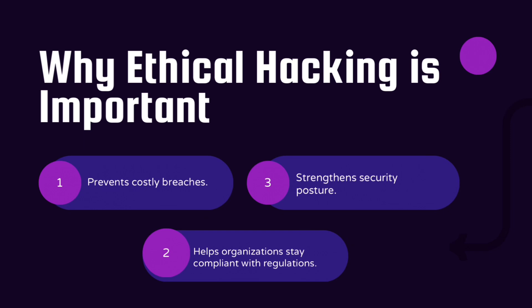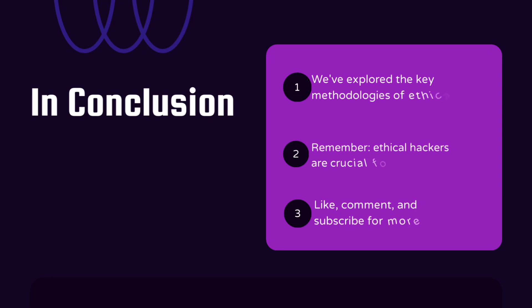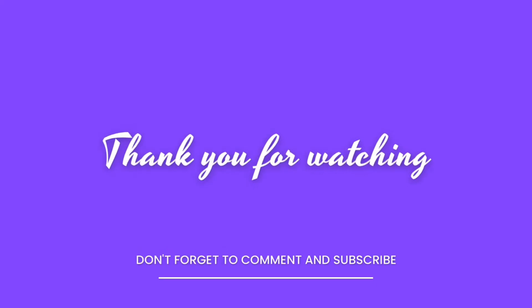Ethical hacking plays an important role in protecting organizations from cyber threats. By simulating real-world attacks, ethical hackers help companies identify and fix weak points before attackers can exploit them. In conclusion, we've covered the main methodologies used in ethical hacking: reconnaissance, scanning, gaining access, maintaining access, covering tracks, and reporting. Ethical hacking is a key practice that helps safeguard the digital world, and as cyber threats continue to grow, so does the demand for skilled ethical hackers. Thanks for watching!